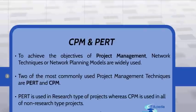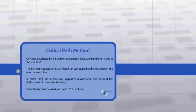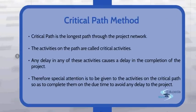Let's begin with the Critical Path Method. CPM was developed by EI DuPont, the numerics company, and Remington Rand in the year 1957. The first test was made in 1958 when CPM was applied to the construction of a new chemical plant. In March 1959, the method was applied to a maintenance shutdown at DuPont works in Louisville, Kentucky, and the unproductive time was reduced remarkably from 125 hours to 93 hours. From here on, the success of the critical path method began.